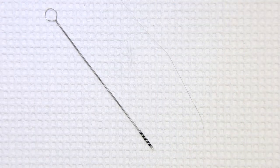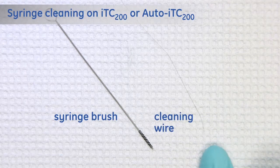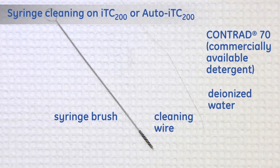To perform this procedure on MicroCal ITC 200 or Auto ITC 200, you will need a syringe brush, a cleaning wire, a mixture of Contrad 70, and deionized water.